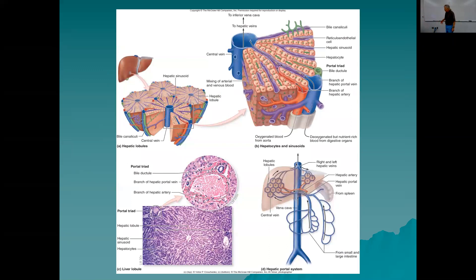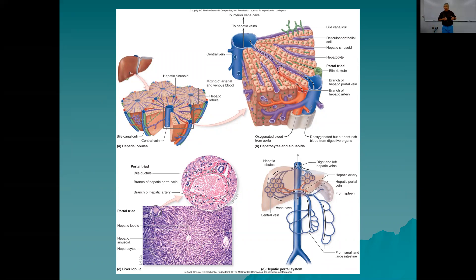In cross section through a liver lobule, you can see the triad at the outside — the branch of the hepatic portal vein, branch of the hepatic artery, and a bile ductule. Blood flows toward the central vein; bile flows toward the triads, toward the outside. The central veins are called the hepatic veins, which bring blood to the inferior vena cava and back to the heart. To summarize: the hepatic portal vein brings blood to the liver; the hepatic vein brings blood away.